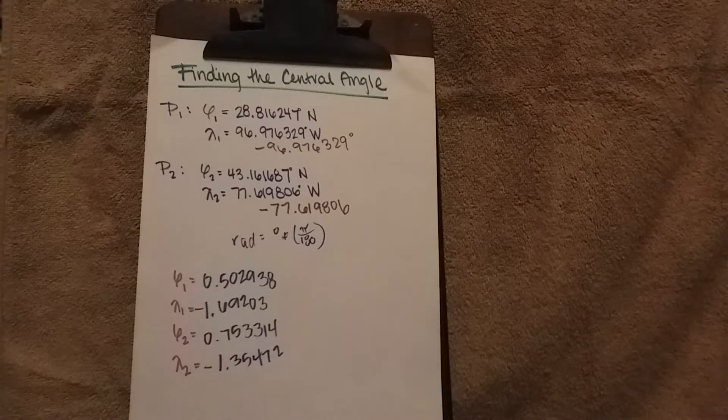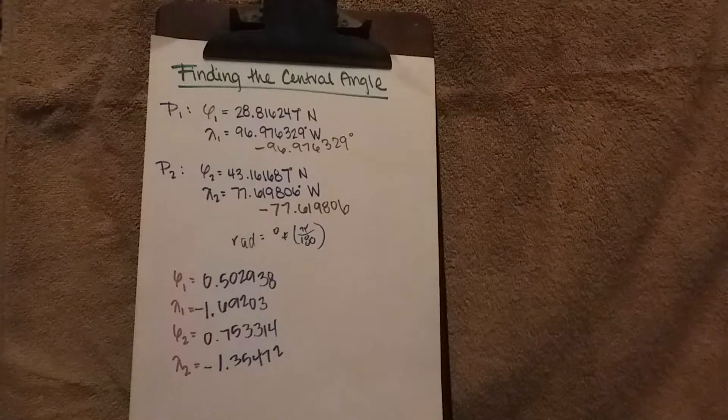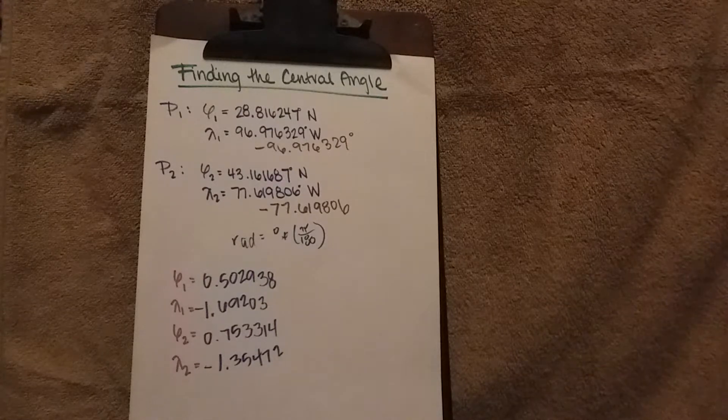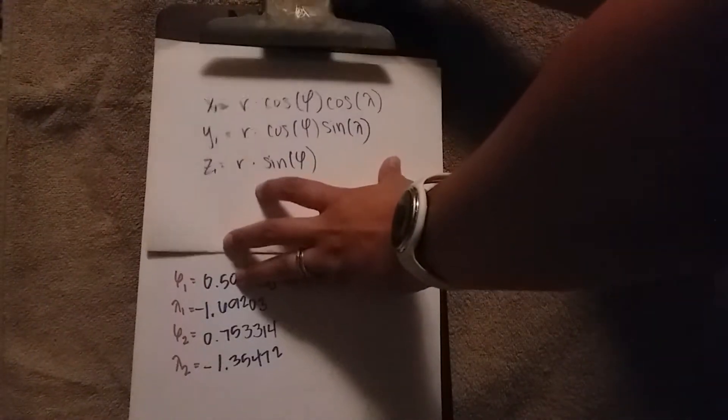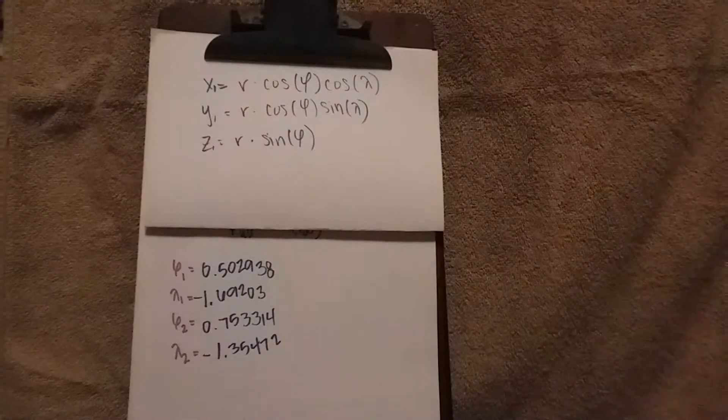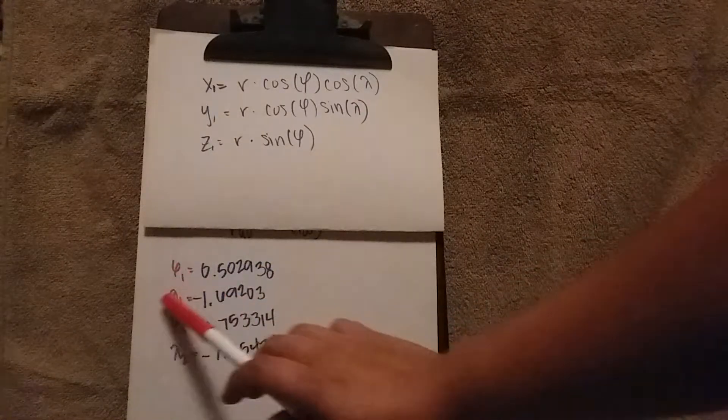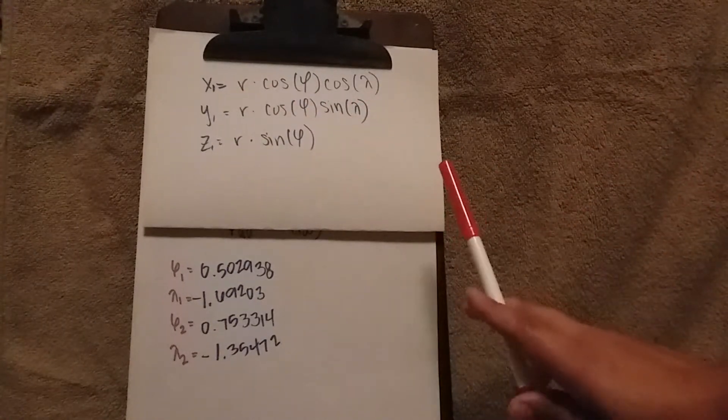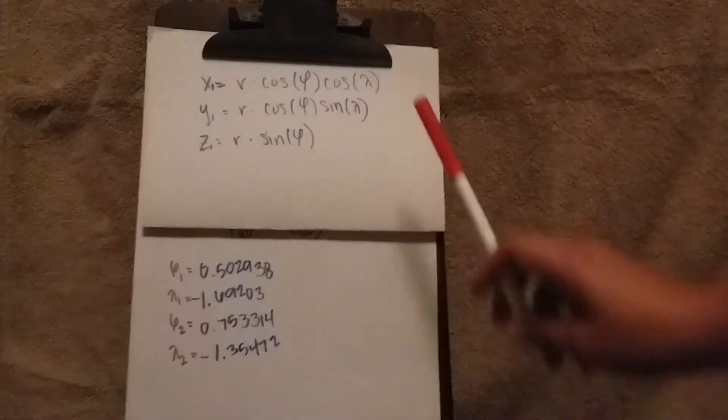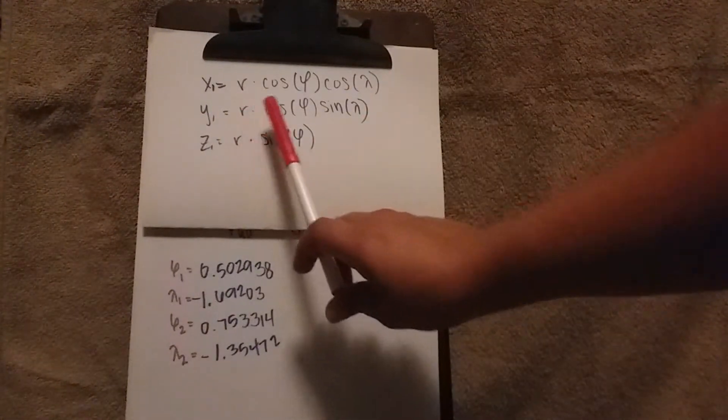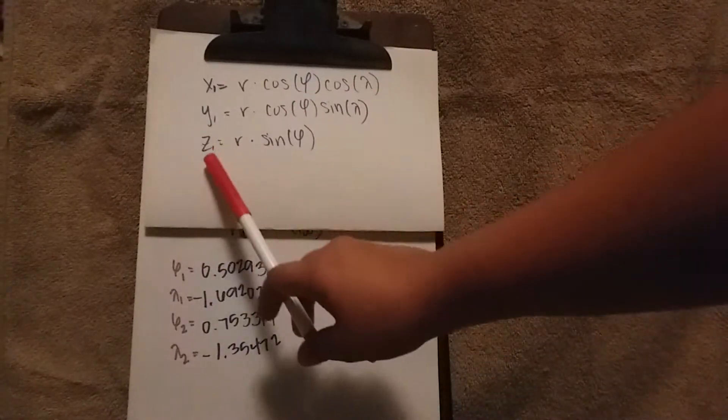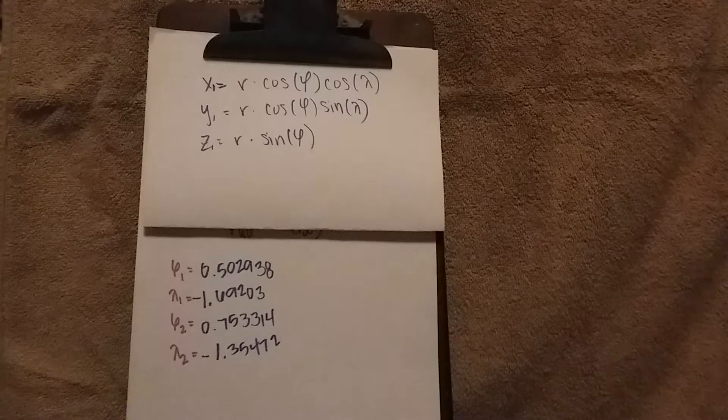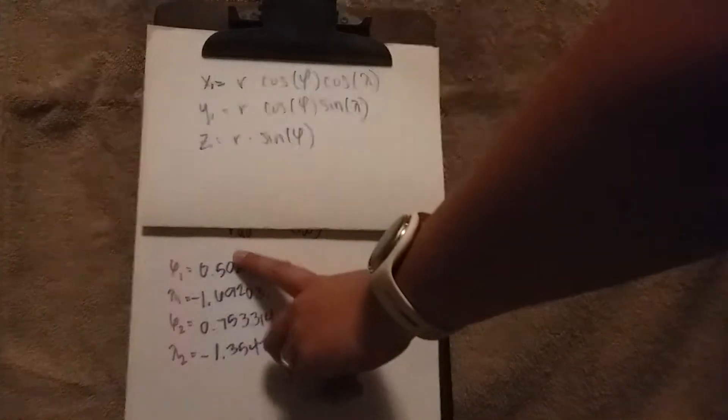Now that we have that, we are going to use some very special formulas to develop a Cartesian coordinate. Our Cartesian coordinate will be in XYZ. For each point, point 1 and point 2, we'll find X through this formula: radius times cosine latitude times cosine longitude. Y is our radius times cosine latitude sine longitude. And our Z is our radius times our sine latitude. By doing that, for each point, we get two XYZ coordinates.